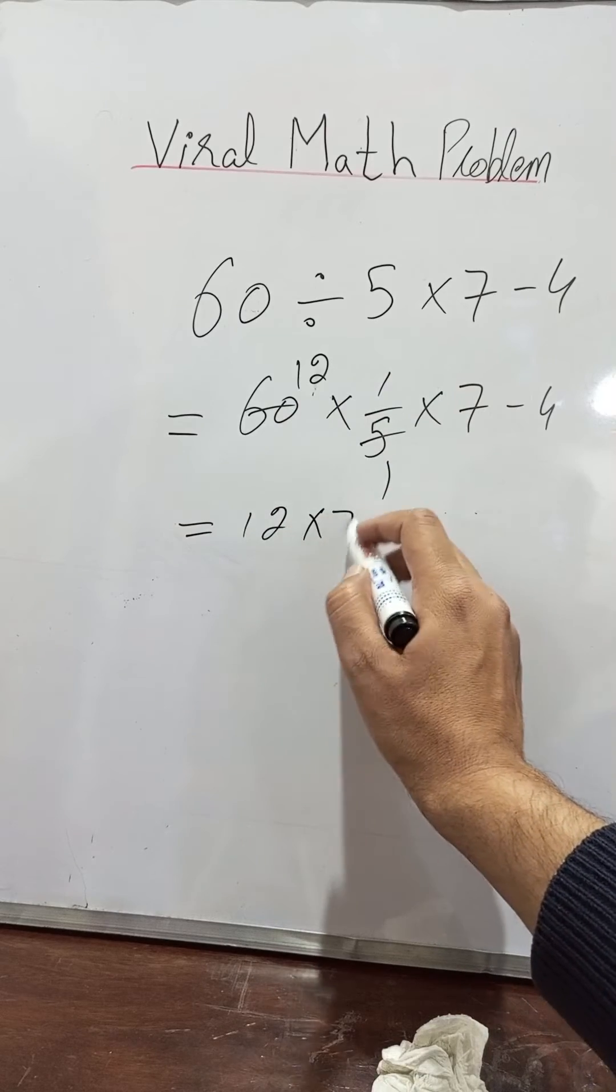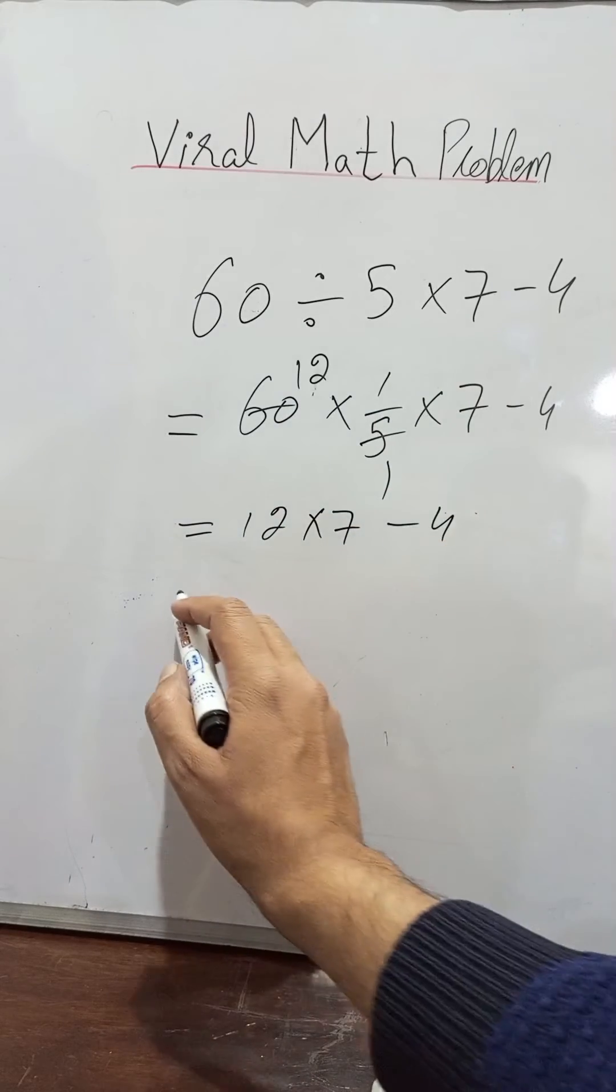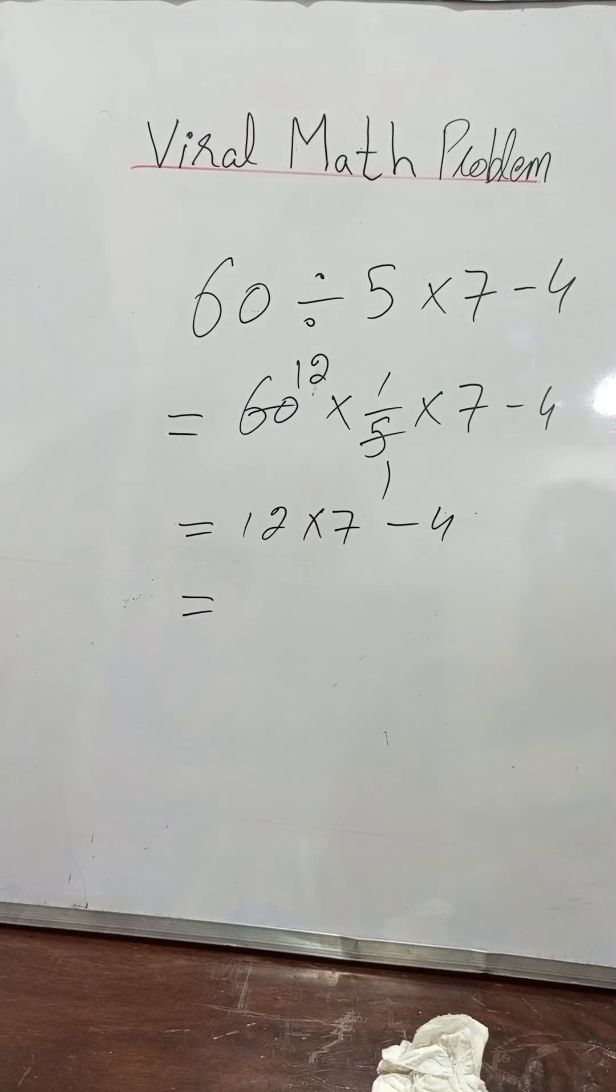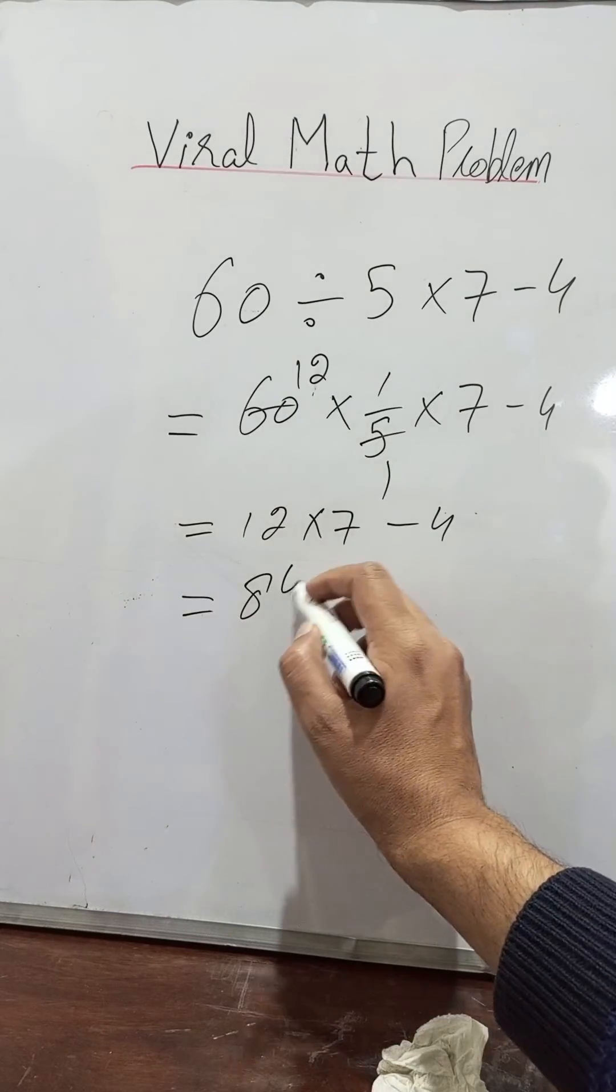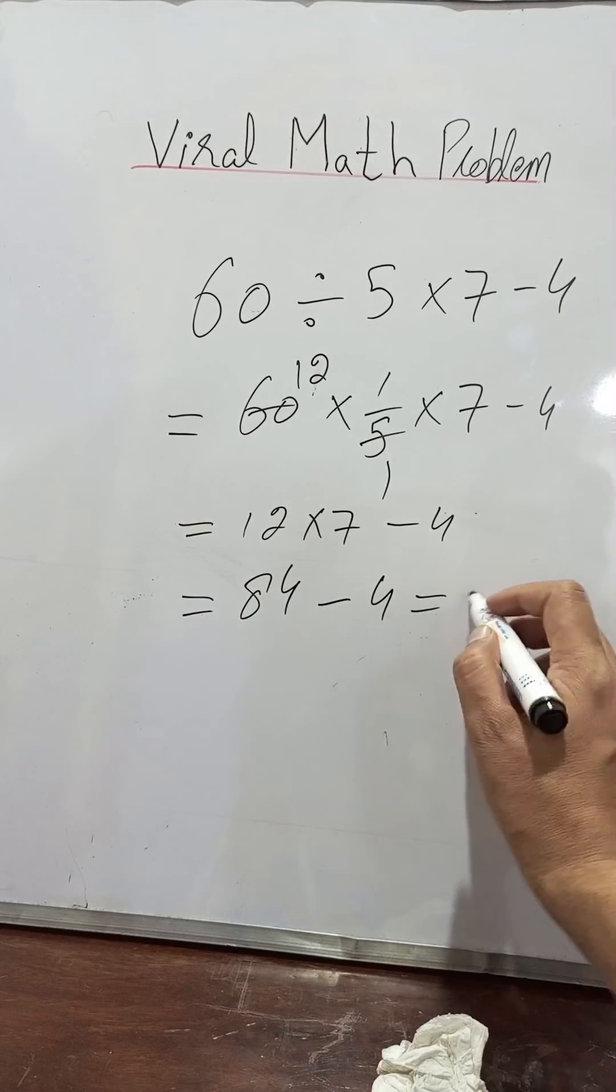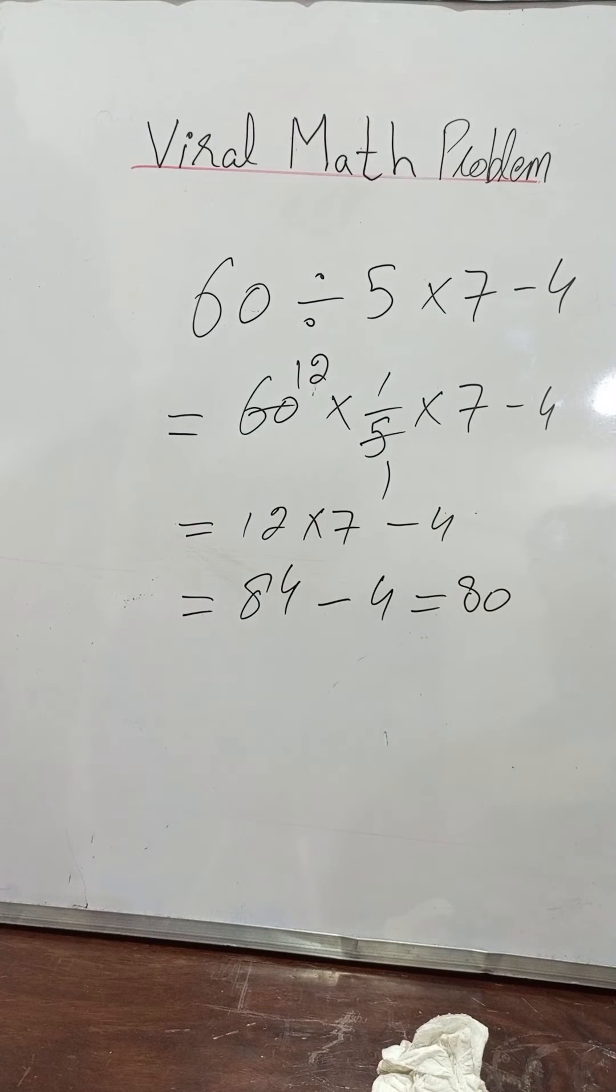12 into 7 minus 4. 12 into 7, we get 84 minus 4, we get 80. In this case, we get the answer 80 when we remove the bracket, and with the bracket...